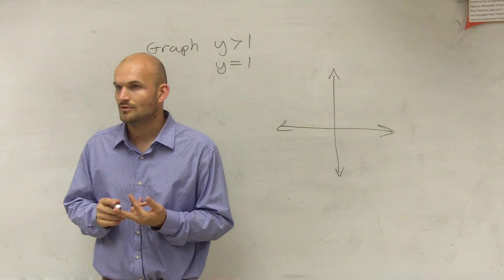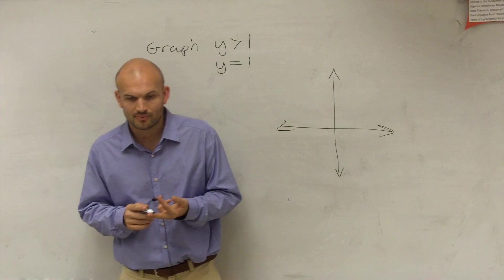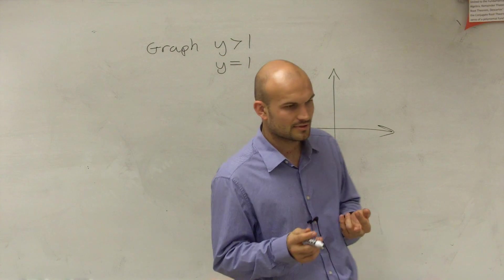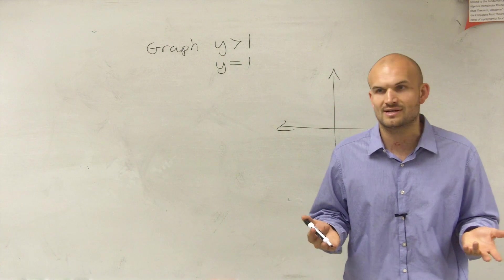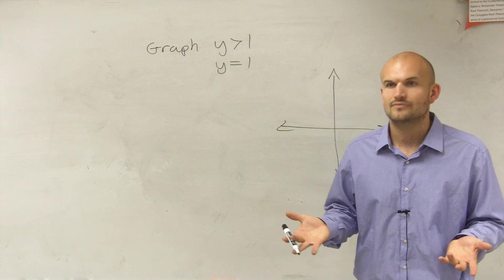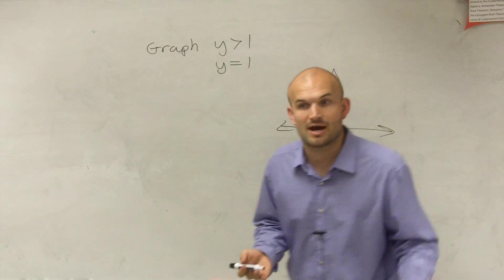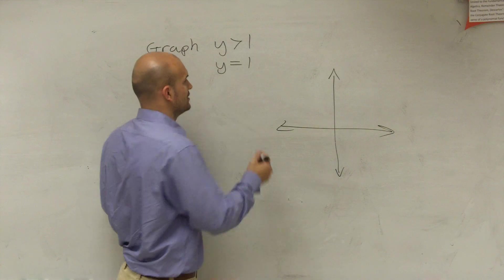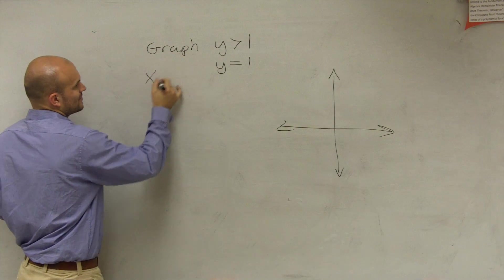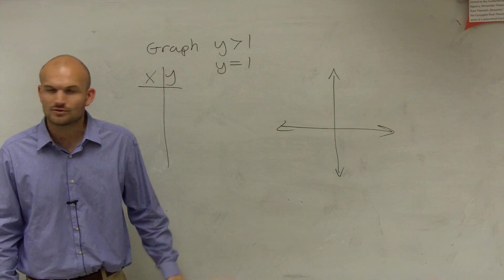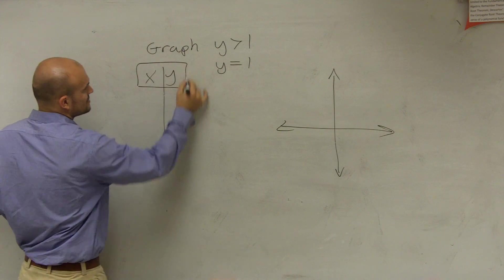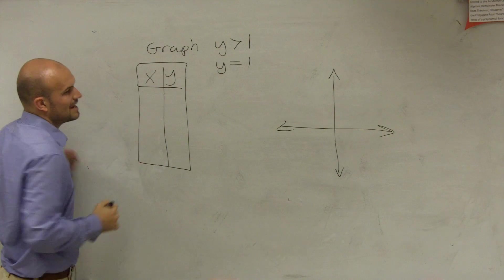Well, you could use your standard form to plug it in. But guys, you first learned how to plot using always a table of values, right? A table of x and y values. And that's the same thing I want to look at. That's the way I'm going to graph this. Whenever I have what we call a constant function, meaning y equals 1 or x equals 1, I like to use a table.